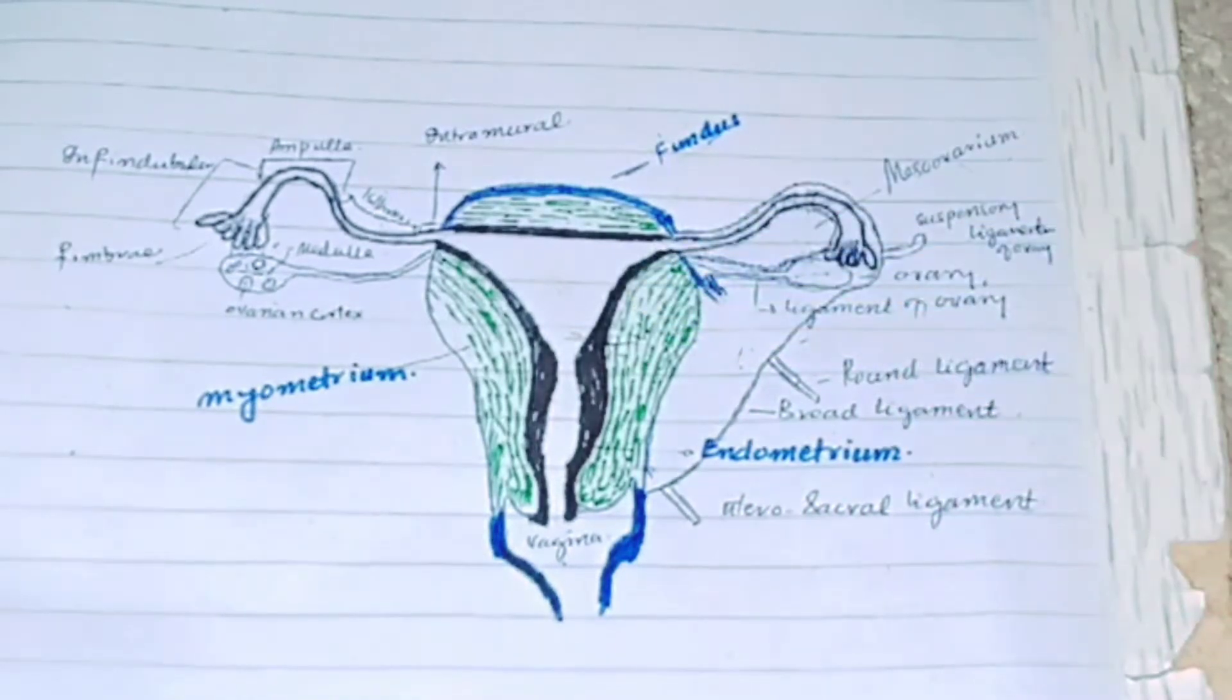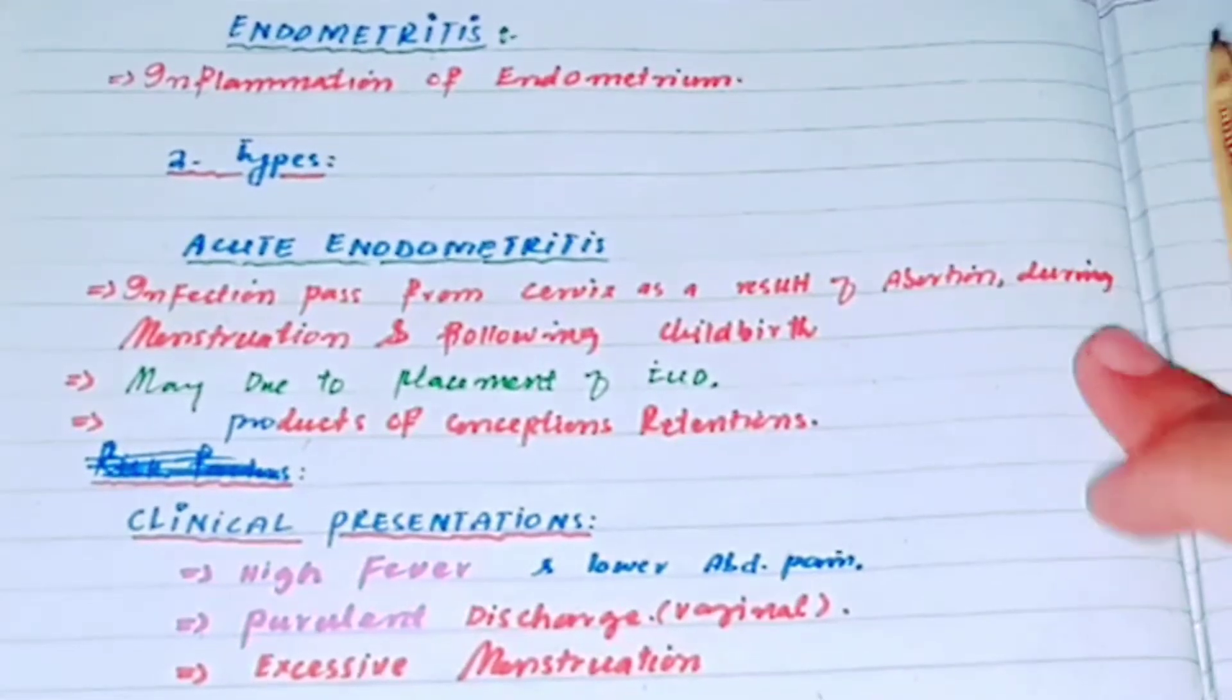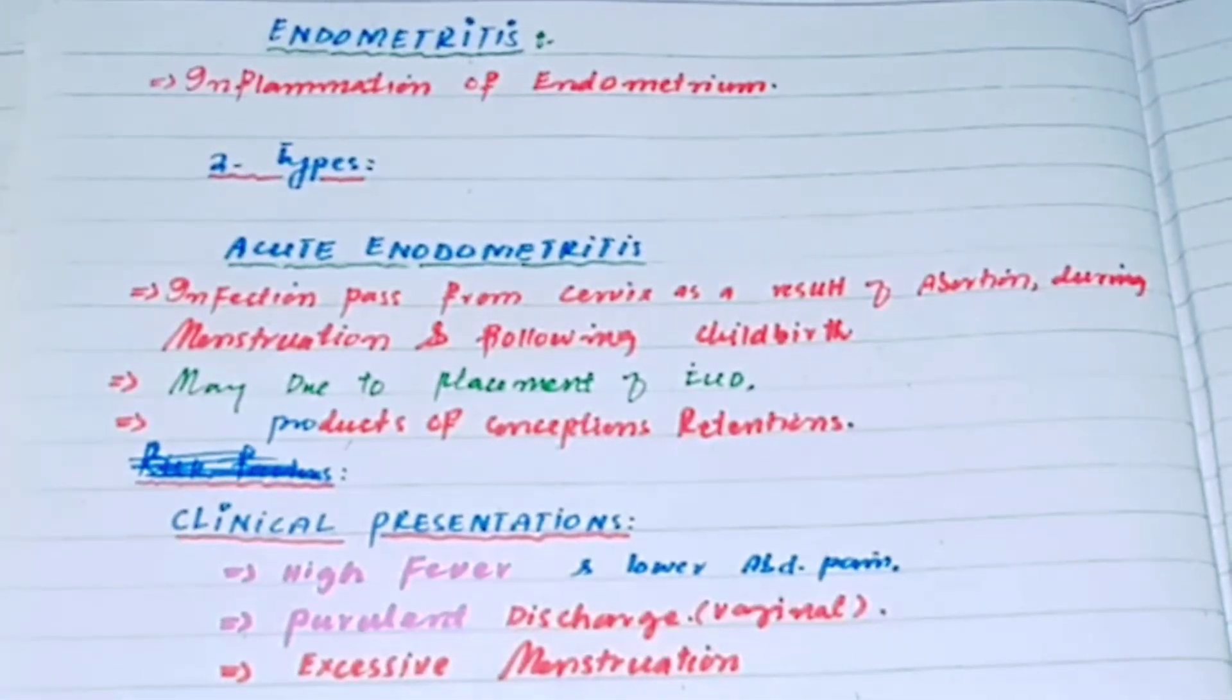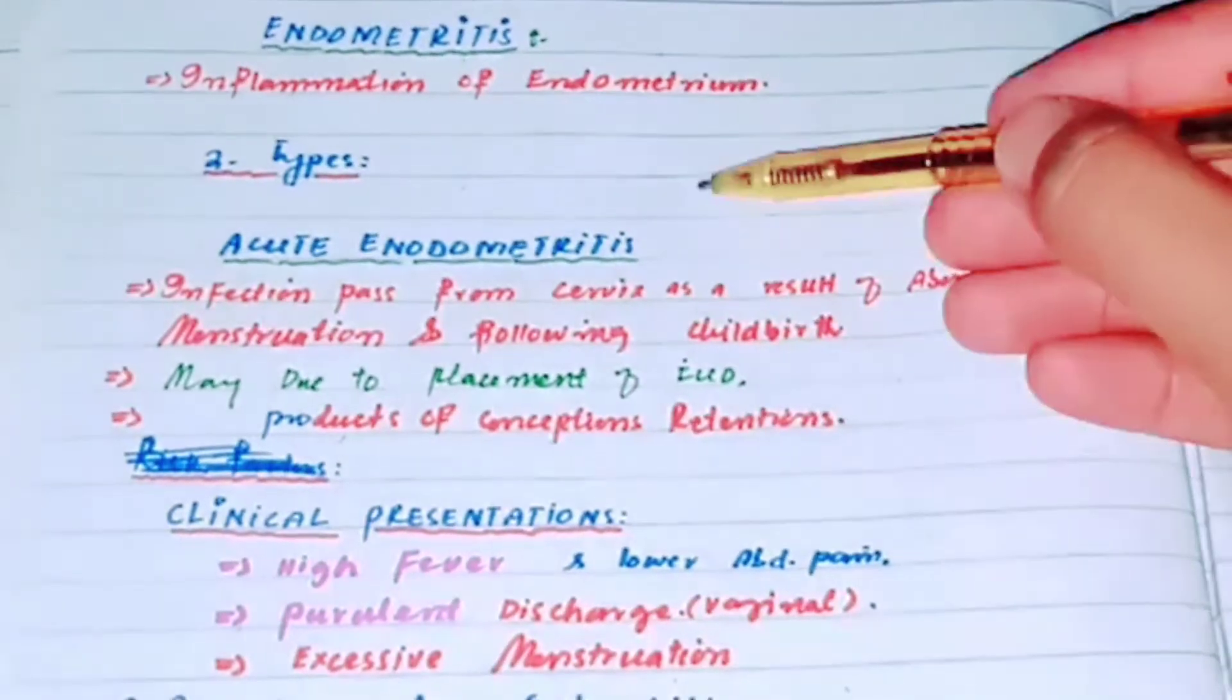In this video I'm going to talk about endometriosis. Endo means endometrium and itis means inflammation, so it is the inflammation of the endometrial layer of the uterus. There are two types of endometriosis: one is acute endometriosis and the other is chronic endometriosis.